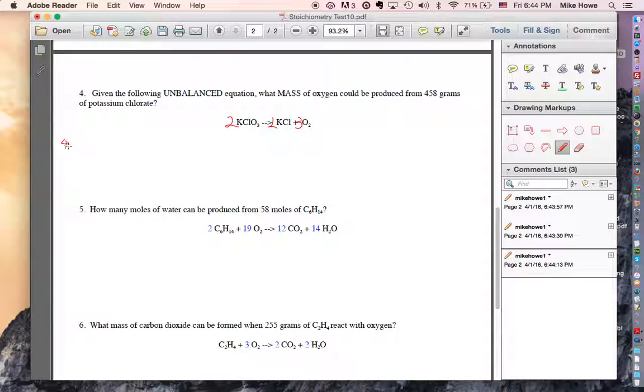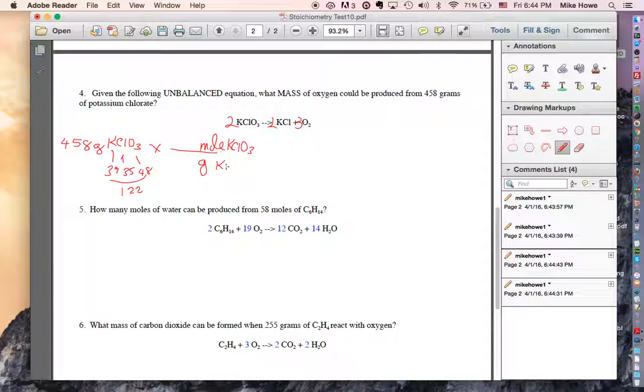We have 458 grams of potassium chlorate, KClO3. Potassium is 39, chlorine is 35, oxygen is 16, but there are three of them, so that's a total of 48. That total is 122. So we're going to multiply then, put grams on the bottom, put moles on the top, because we're changing to moles. It's important that you write down the chemical that you're talking about.